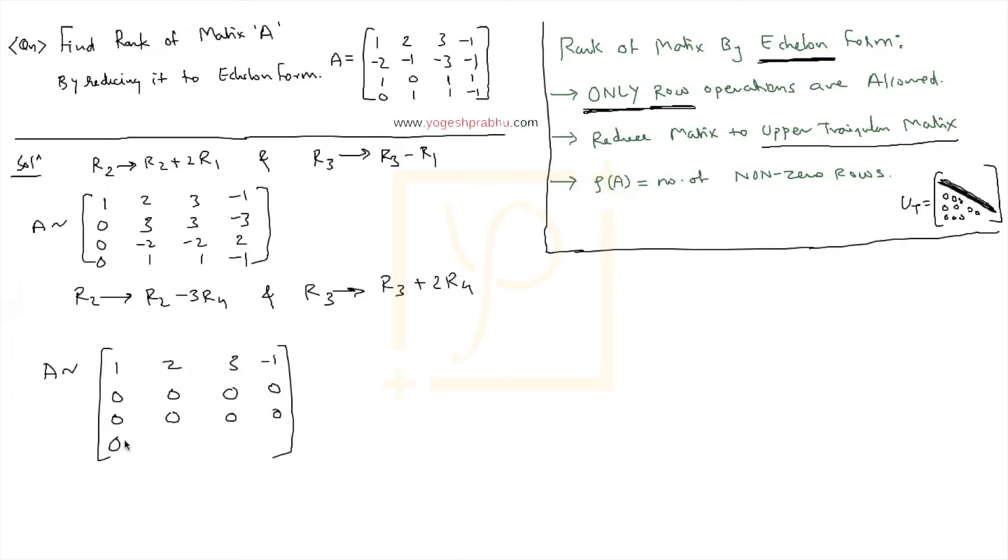And then this is 0, 1, 1, and minus 1. That's the reduced value of A.